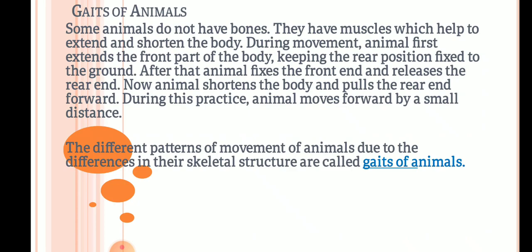As you know, some animals do not have bones. There are many animals that don't have a bony skeleton — they have muscles which help to extend and shorten the body. These muscles stretch or shorten, and during movement, animals first extend the front part of the body while keeping the rear position fixed to the ground.